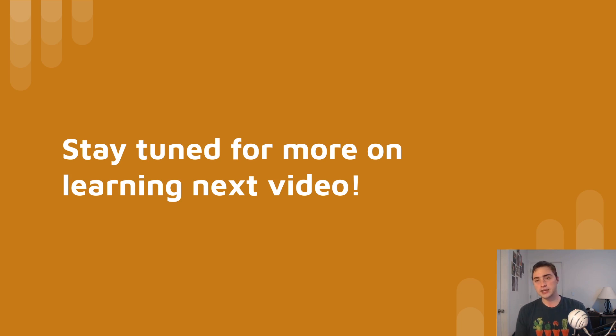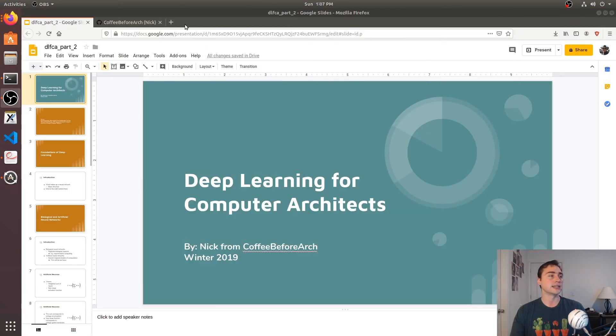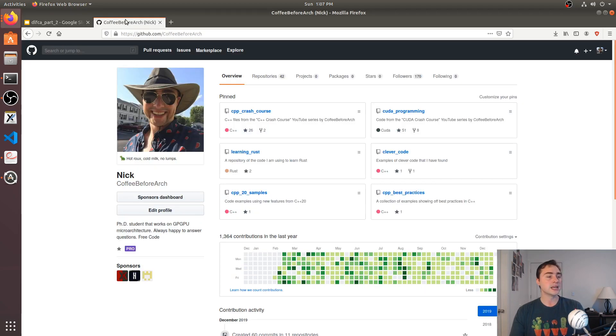That's going to go ahead and do it for this video. Again, thanks for watching. As always, all this content can be found online and it's in this book, Deep Learning for Computer Architects from the Synthesis Lectures on Computer Architecture. If you're interested in any of my other content, check me out on this YouTube channel. I also have my GitHub page, github.com/coffeebeforearch, where I host all the code for all of my series. That's going to go ahead and do it for this time. As always, I'm Nick and hope you have a nice day.